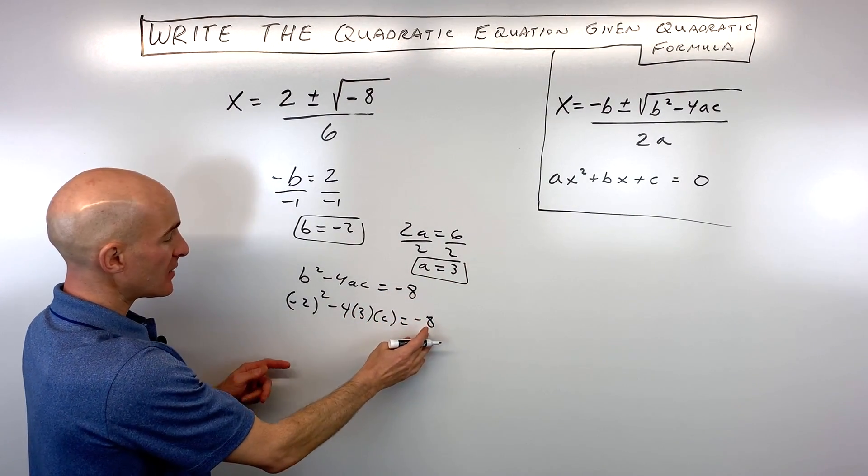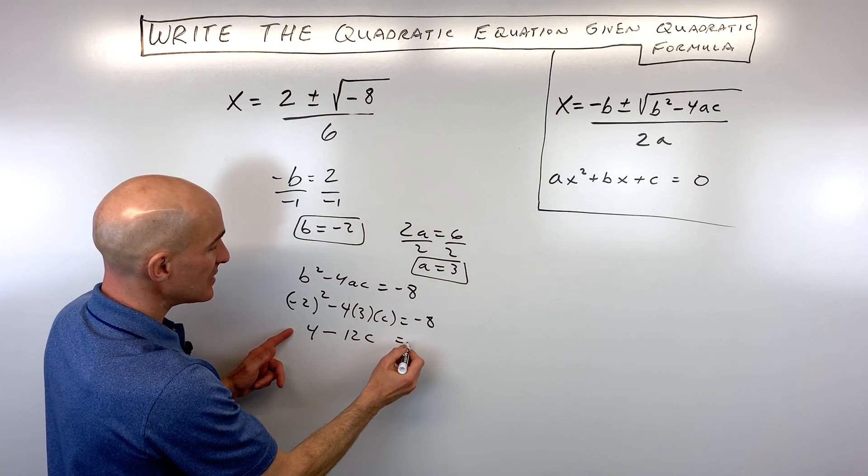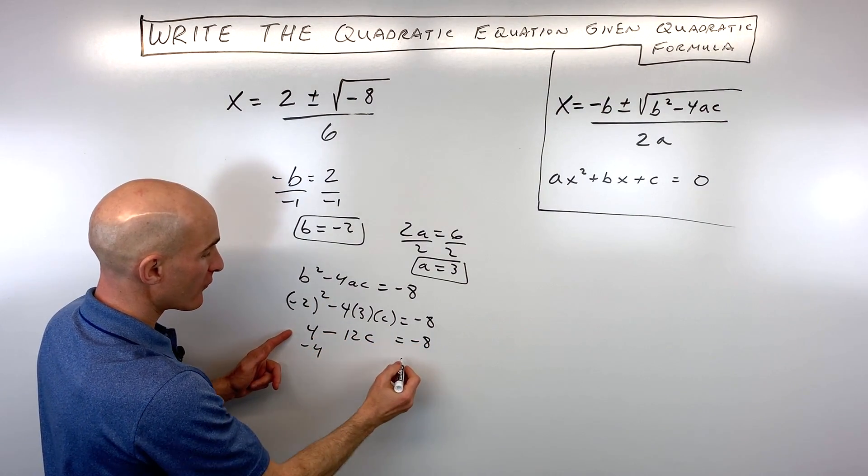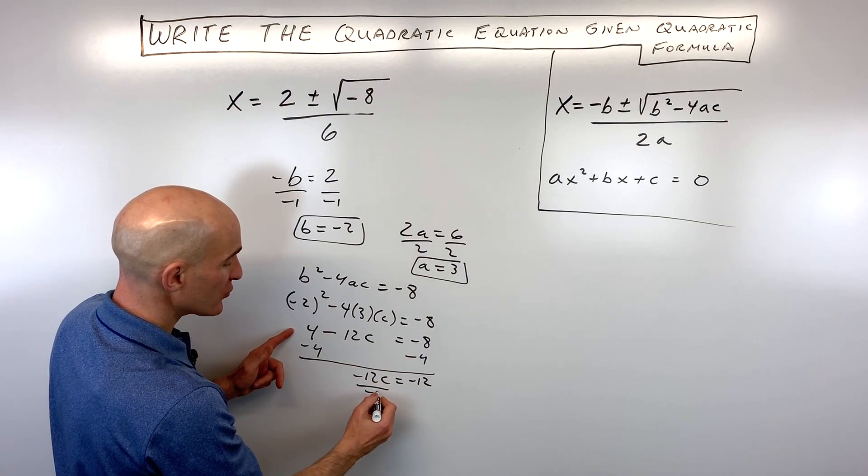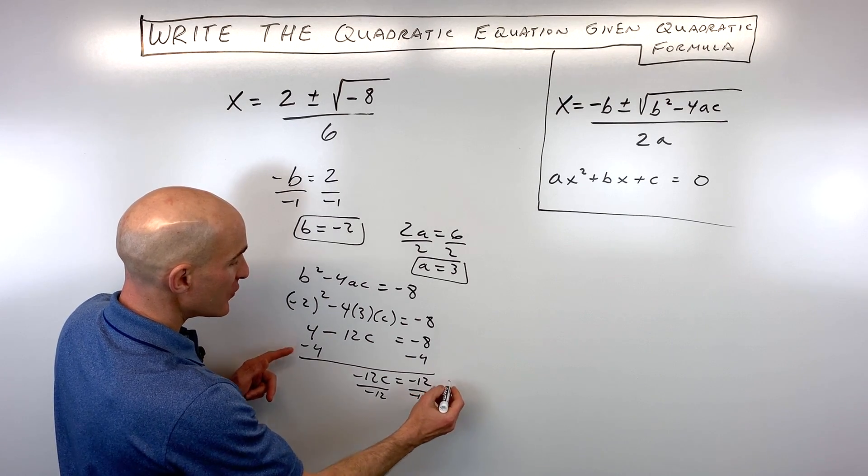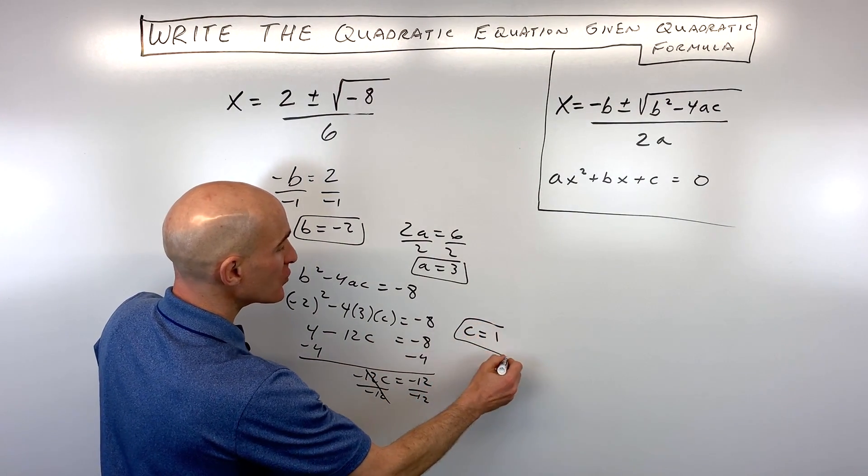So we've got negative 2 squared is 4, minus 12c equals negative 8. Subtract 4 from both sides of the equation, we've got negative 12c equals negative 12. And if we divide both sides by negative 12, you can see that c is equal to positive 1.